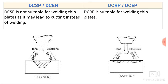Direct current straight polarity is not suitable for welding thin plates as it may lead to cutting instead of welding, since maximum heat is generated at the work piece and we get a broader heat affected zone. Direct current reverse polarity is suitable for welding thin plates as maximum heat is generated at the electrode tip and less heat is generated at the surface of the work piece.